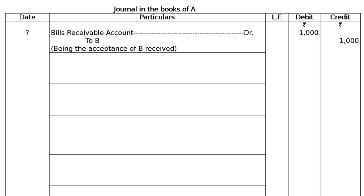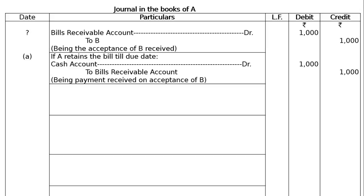In Part A, if A retained the bill till the due date and then realized it on maturity — if A is retaining the bill with him expecting payment at the end, there is no entry for keeping the bill. The first entry will do. At the end, on the due date: Cash Account debited to Bills Receivable Account — being payment received on acceptance of B. Rs.1000 in debit and credit. Part A is over.